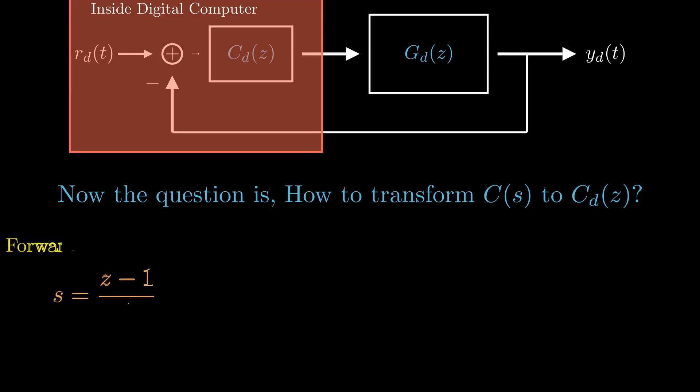Let's start with forward Euler method, where we replace every s in C(s) with z minus 1 divided by T, where T is the sampling interval. The next method, backward Euler method involves substituting s with z minus 1 divided by Tz.